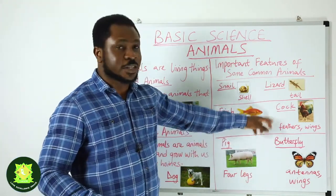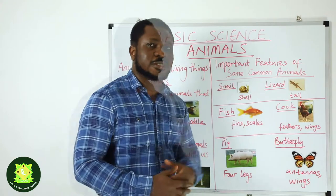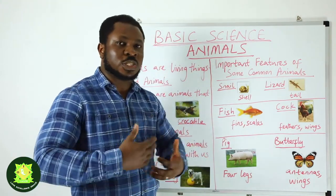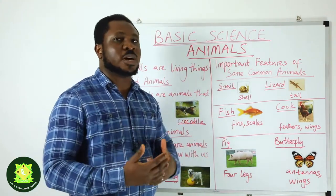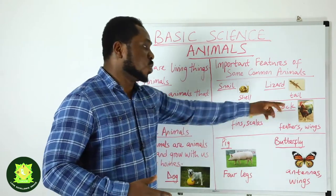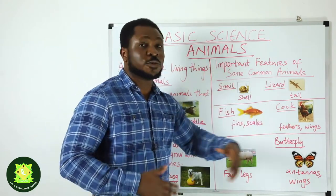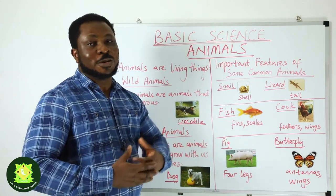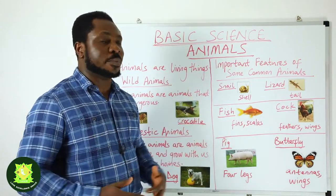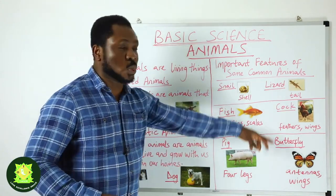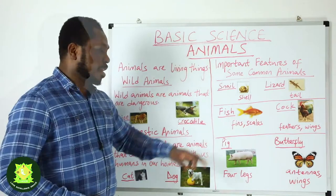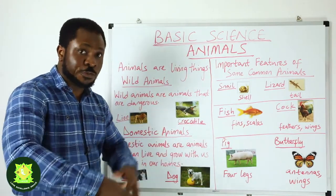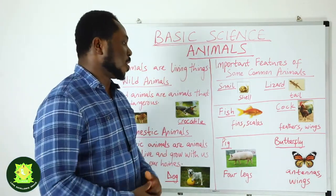When you see a cock, you see their feathers and their wings. The feathers insulate them from harsh weather conditions, so it protects them. The wings help them to fly — cocks do fly, but they don't fly for long like other birds; they've got wings and they can fly. A pig has four legs, and the four legs help them to move from one place to another.